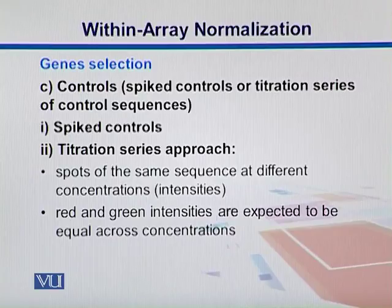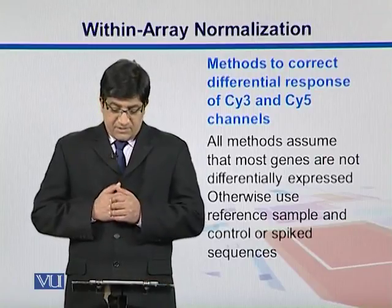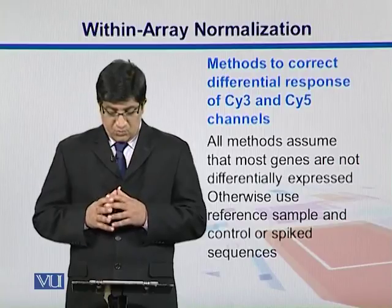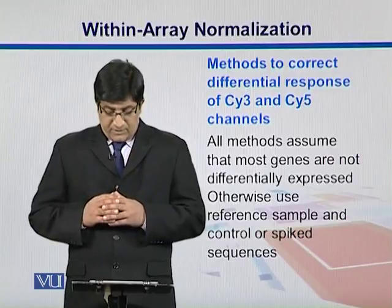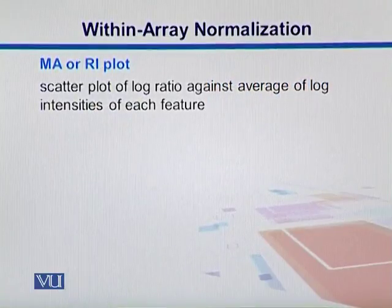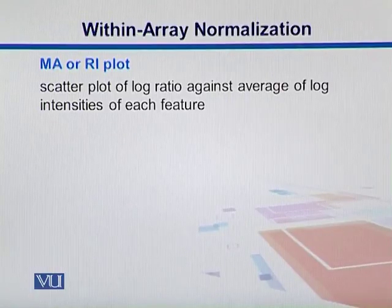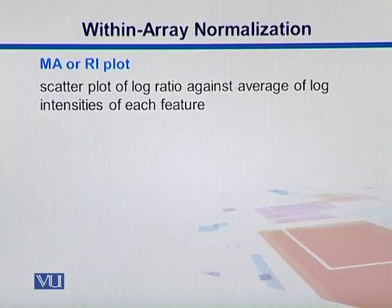All methods assume that most of the genes are not differentially expressed. We can also use a reference sample and have spike sequences as seen earlier. The MA or RI plot is a scatter plot of the log ratio against the average of log intensities of each feature. Once you take those RNAs, put them on slides, and count their intensities, you convert them into log ratios. Then you take the average of the intensities for each feature and plot them, which is called the MA or RI plot.